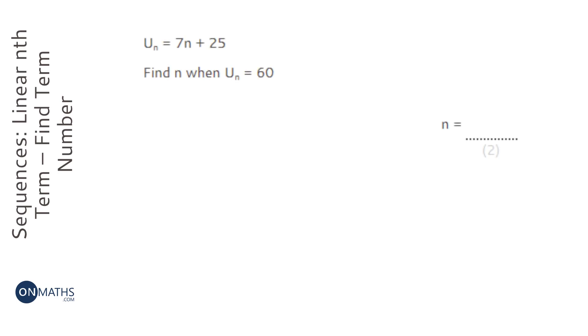OK, so we're given the fact that the nth term is 7n plus 25, but here we're asked to find out what position 60 is in our sequence.